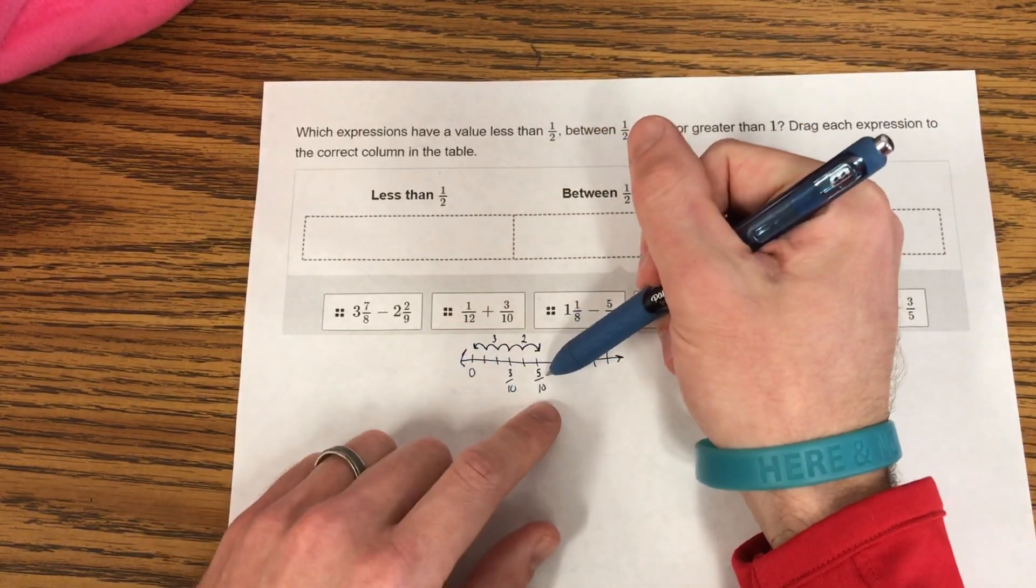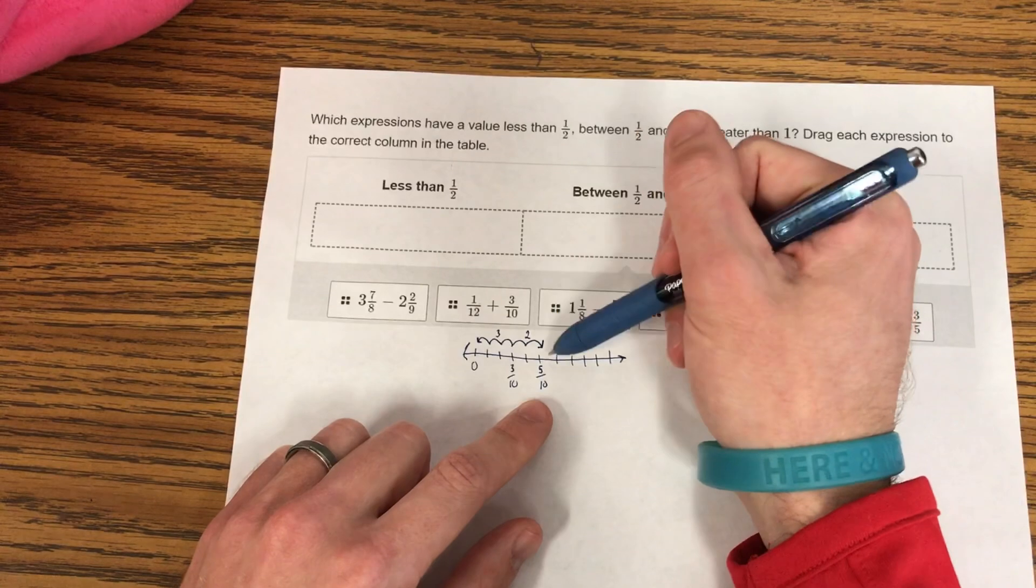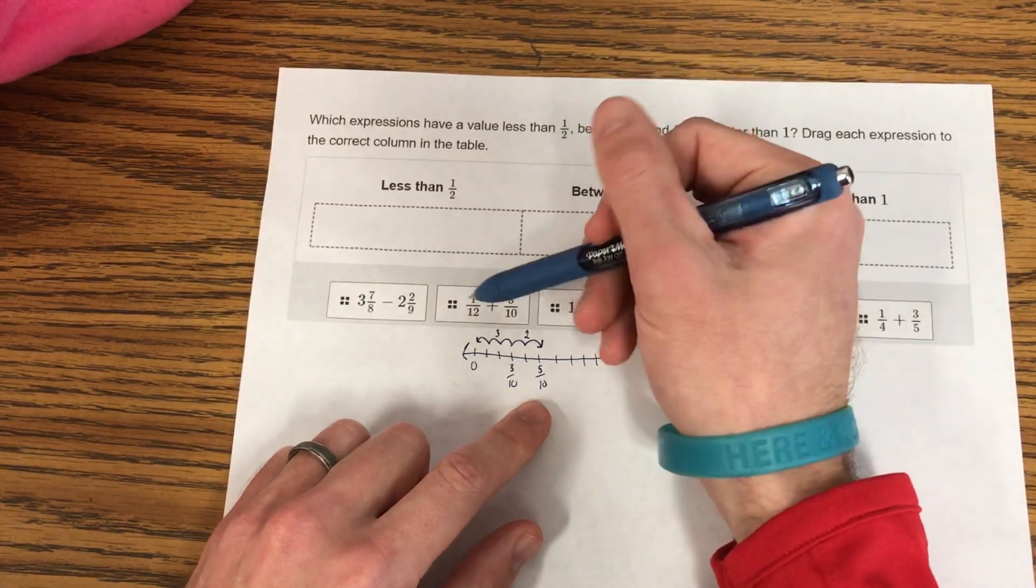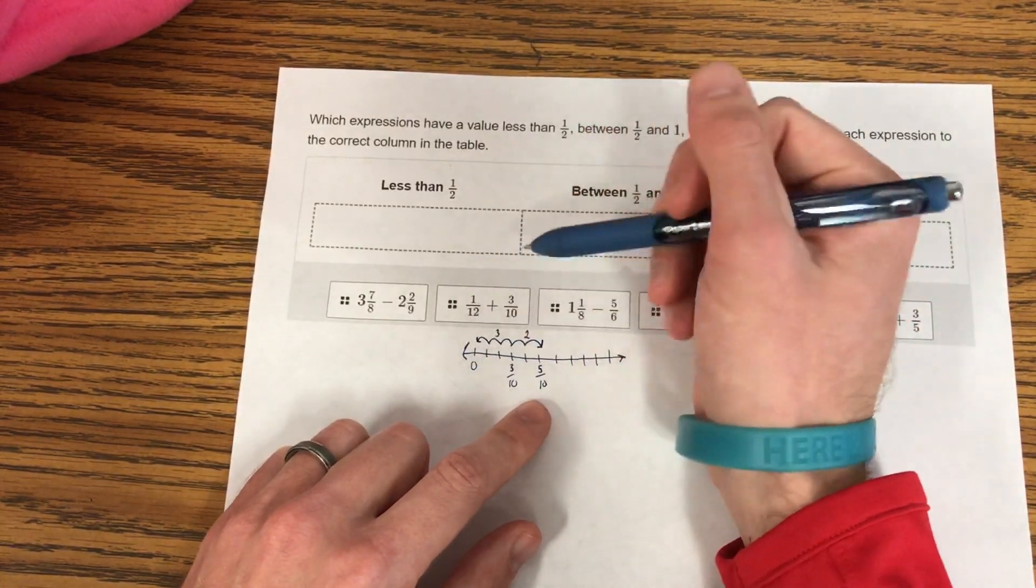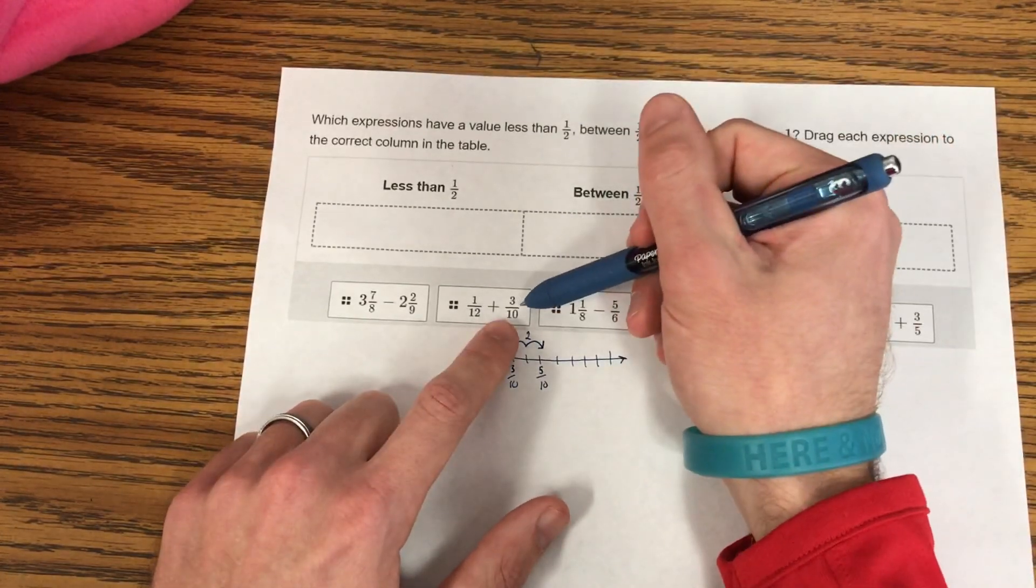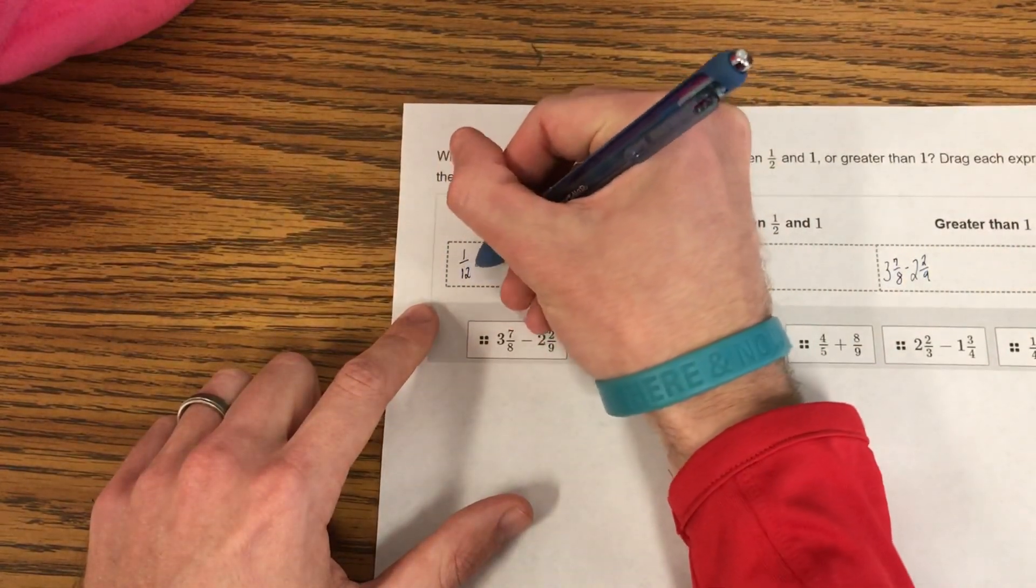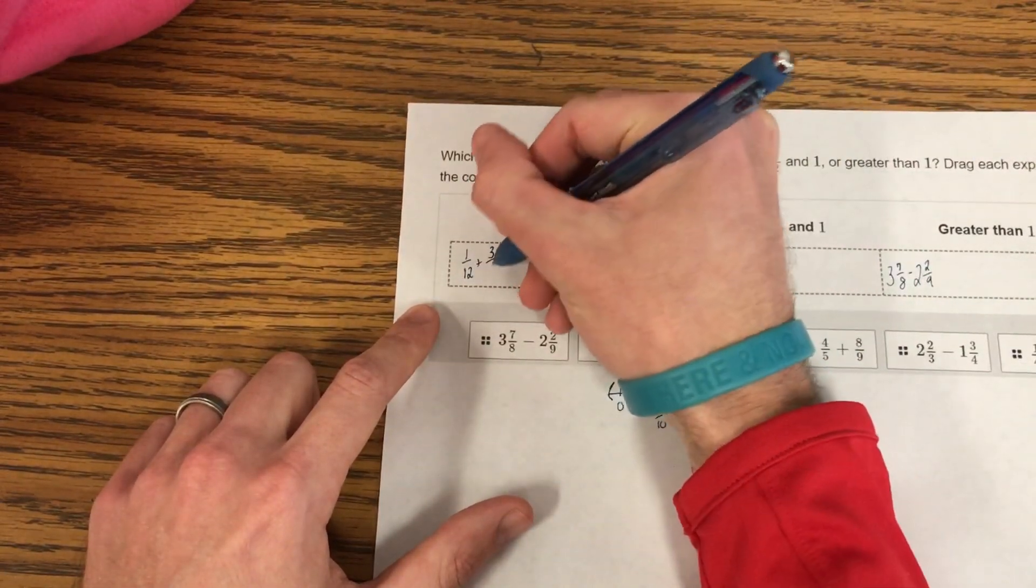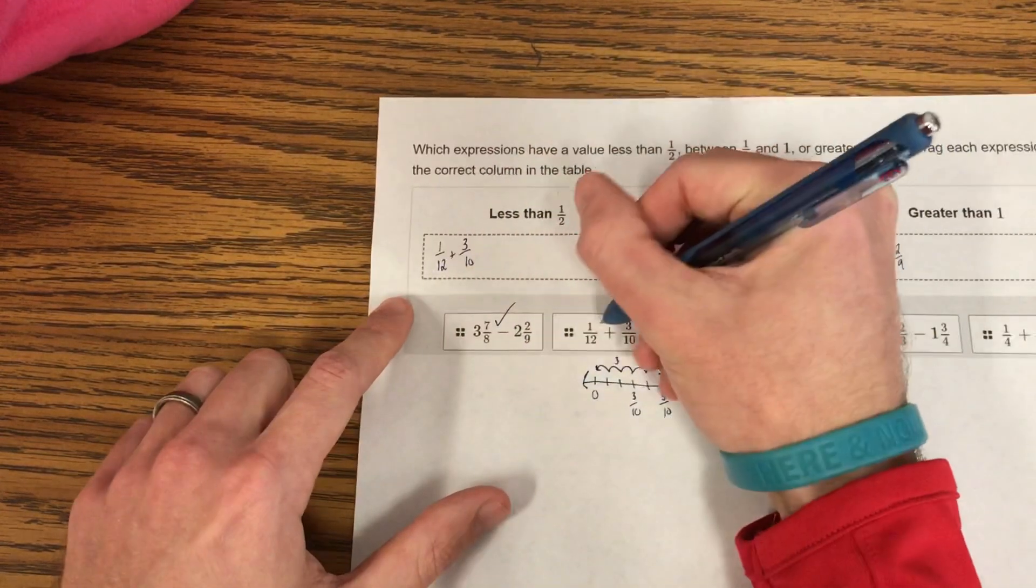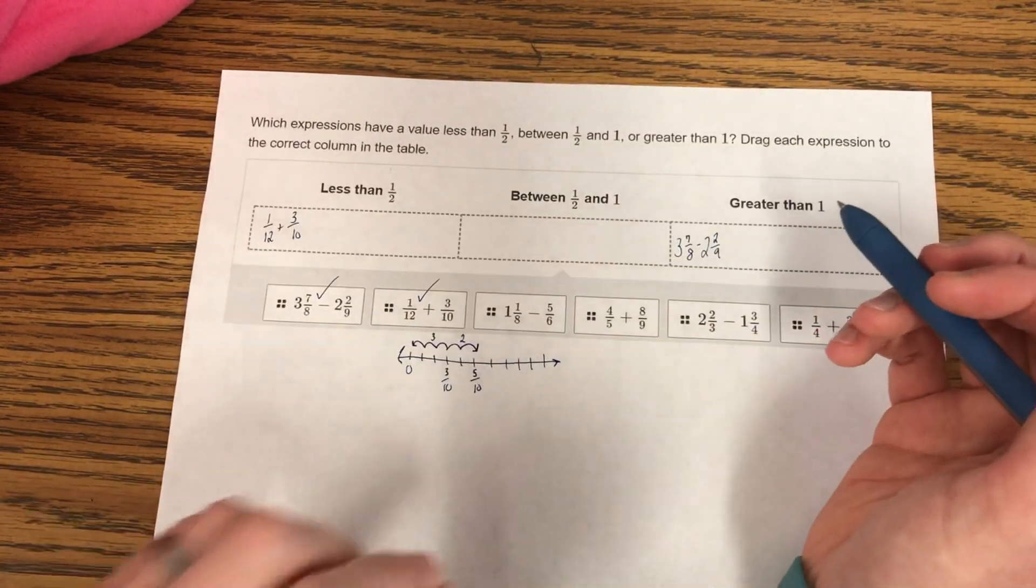So if I'm thinking, yes, this does round up to 1/2, but it is less than 1/2, right? 3/10 is smaller than 5/10. And 1/12, we know, is very close to 0. There's no way that this one is going to be greater than 1/2 because this is less than 1/2. This is less than 1/2. So I know that this whole sum is going to be less than 1/2. So I've done this one, and I've done this one without really having to do much work. I'm just thinking about what is reasonable.